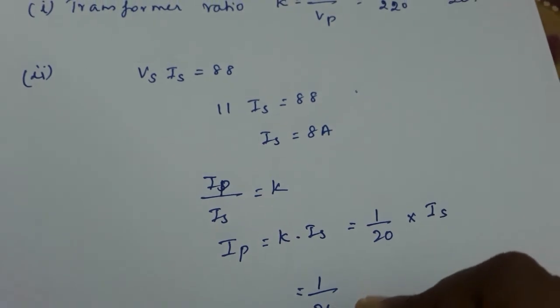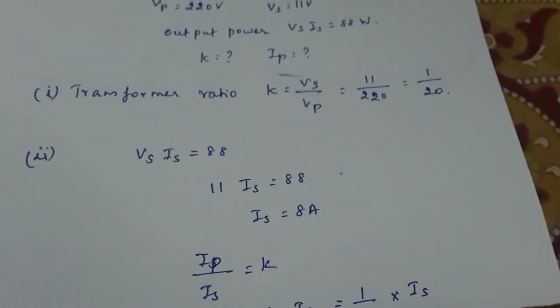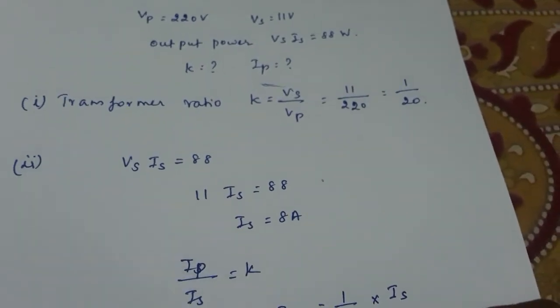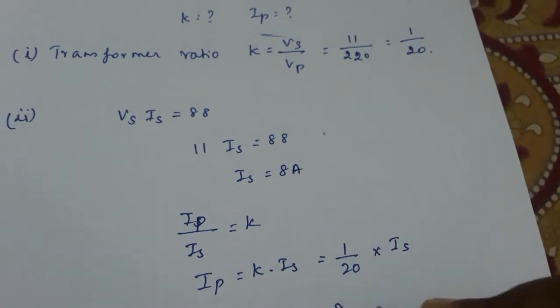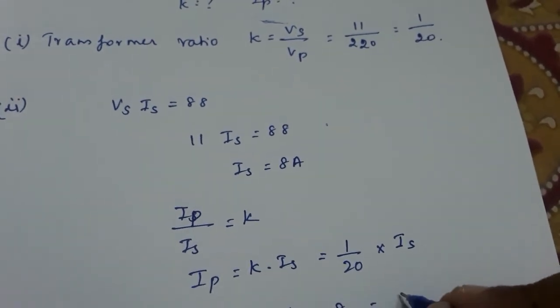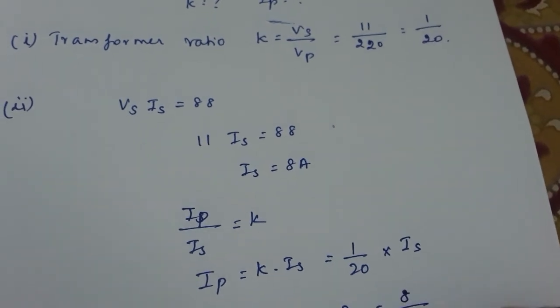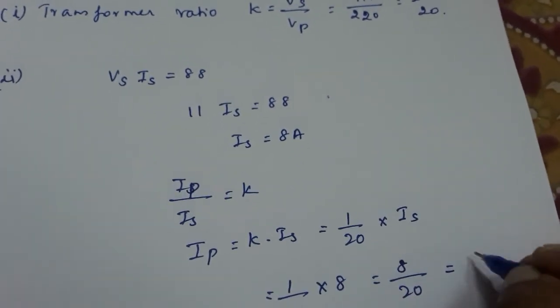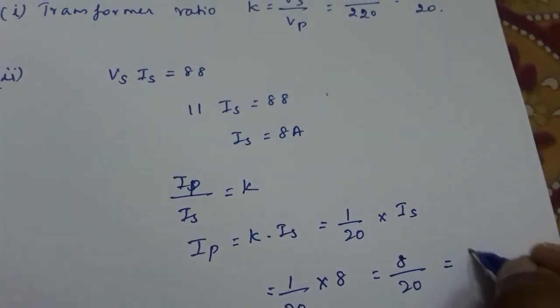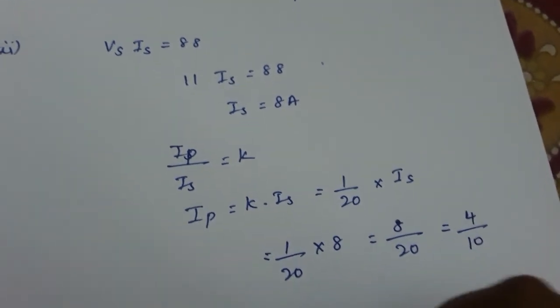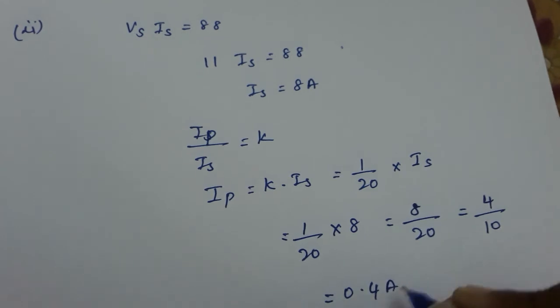It is 1 by 20 into 8, so it is 8 by 20, which is nothing but 4 by 10, which is equal to 0.4 ampere.